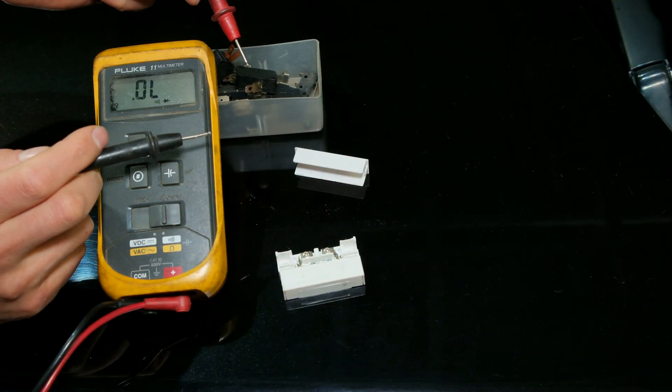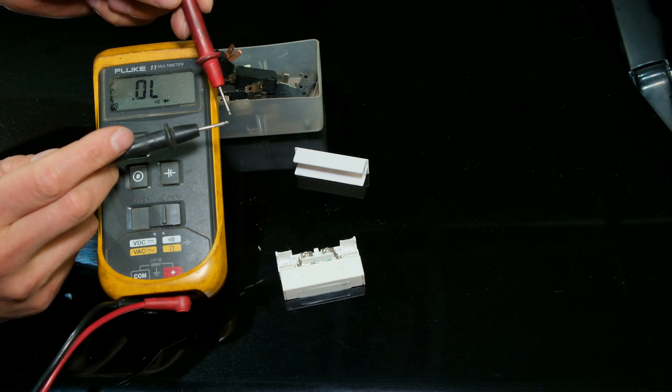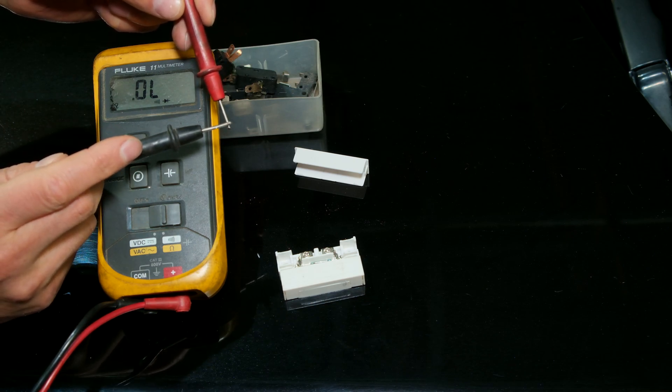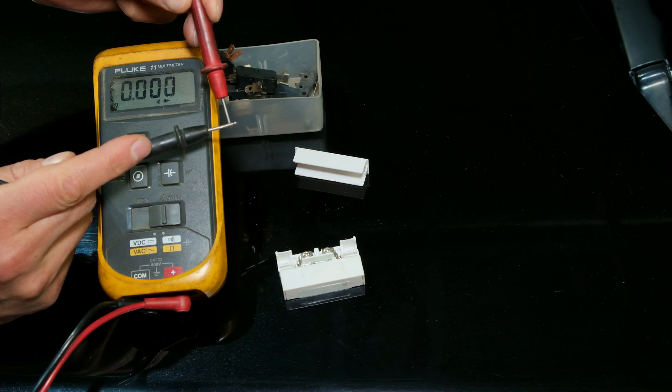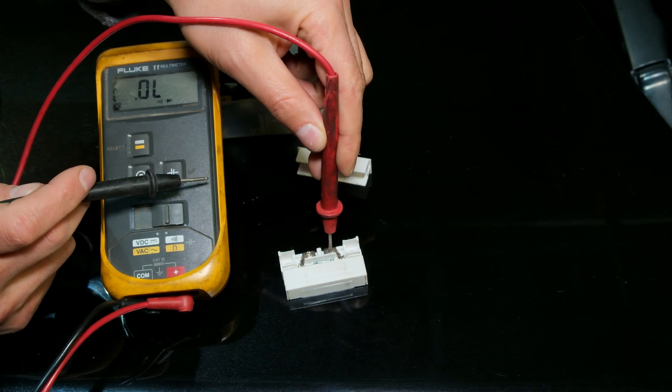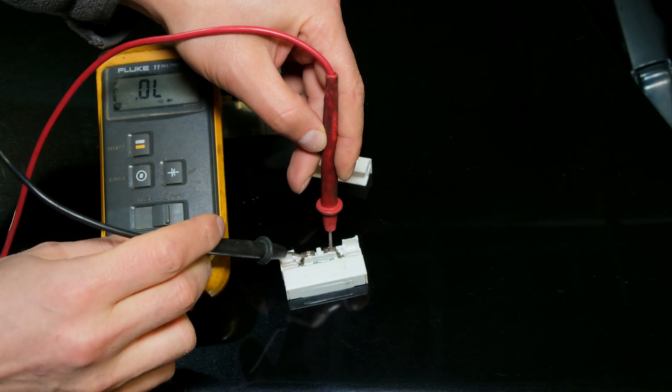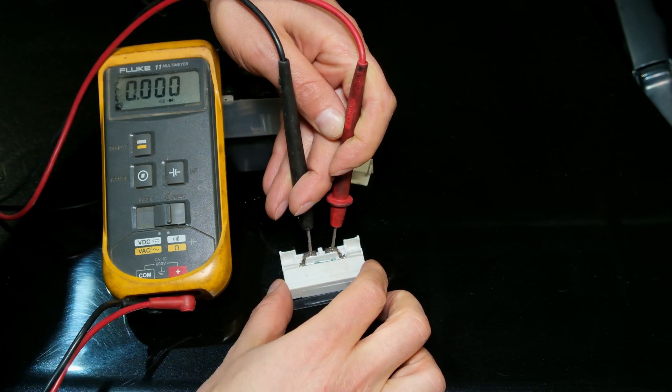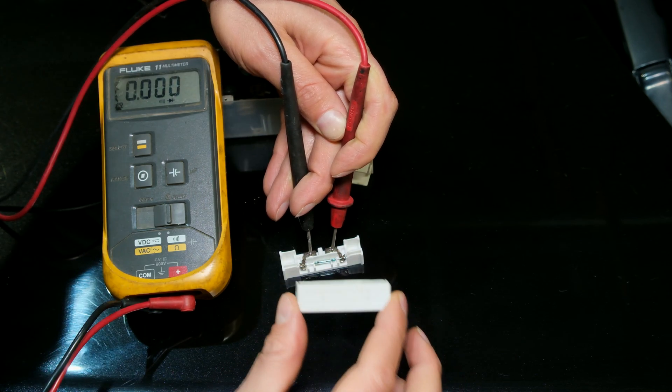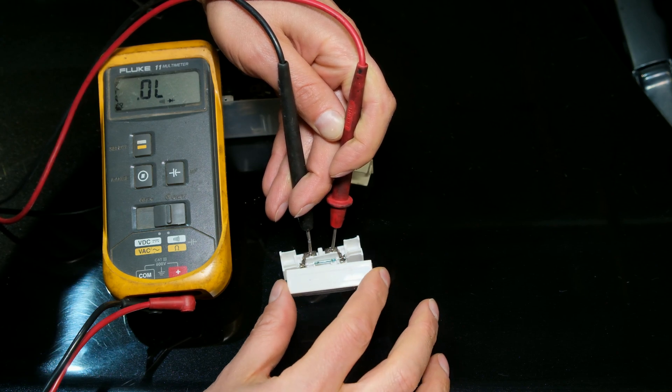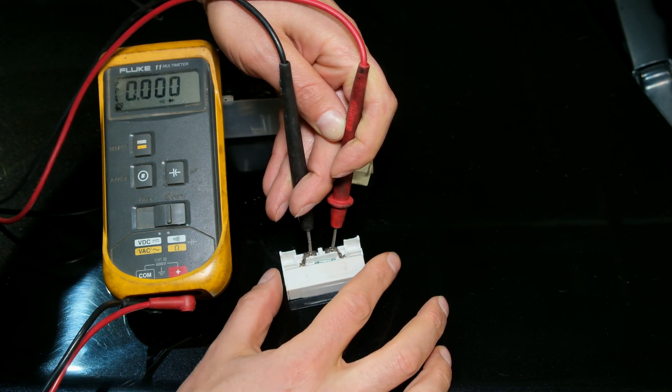If I show you the continuity or short circuit with a multimeter, when I touch the leads notice the short circuit buzzer and the meter says zero. If I put my leads on either side of those terminals, as I move this magnet away I'm opening the circuit, and when I get closer I'm closing the circuit.